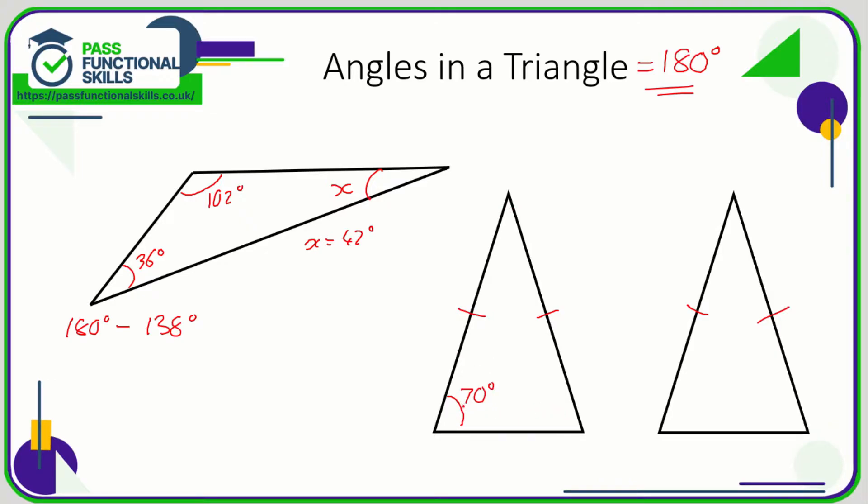So if you get a triangle where they've only labeled one angle and you think well how am I supposed to work out this angle here, it's impossible because I don't know this angle—well it's an isosceles triangle so this angle is also 70 degrees. 70 plus 70 is 140, so if they need to add up to 180 then 180 take away the 140 tells me that x is 40 degrees.